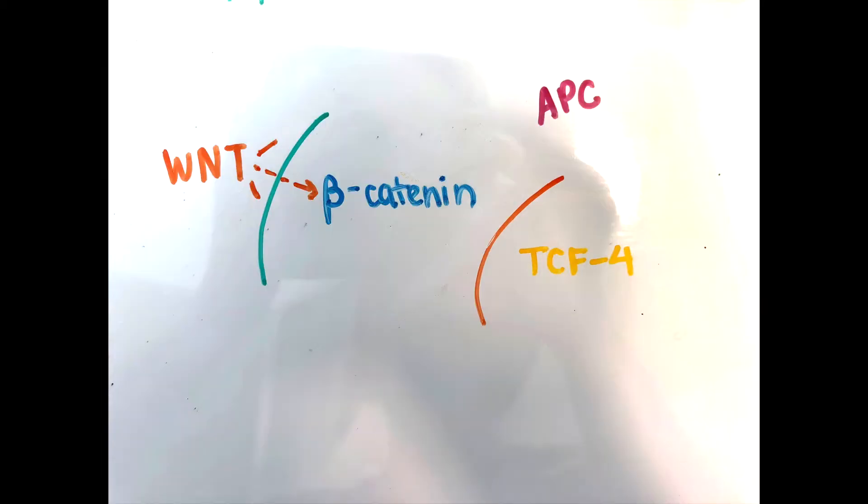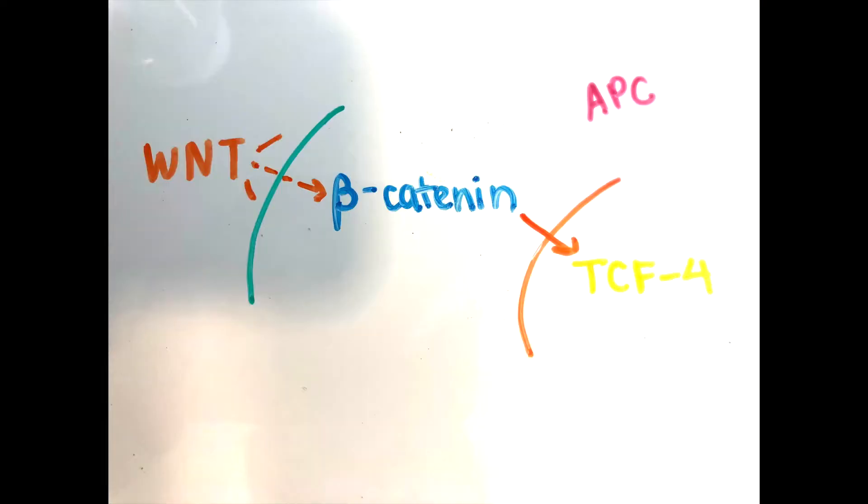In the WNT signaling pathway, the WNT, which is a protein that acts on cell surface receptors, will activate beta-catenin to bind to T-cell factor 4 and convert the TCF from a repressor to an activator. This TCF-4 and beta-catenin complex upregulates the expression of target genes like C-MYC or even cyclin D, which leads to a signaling cascade.